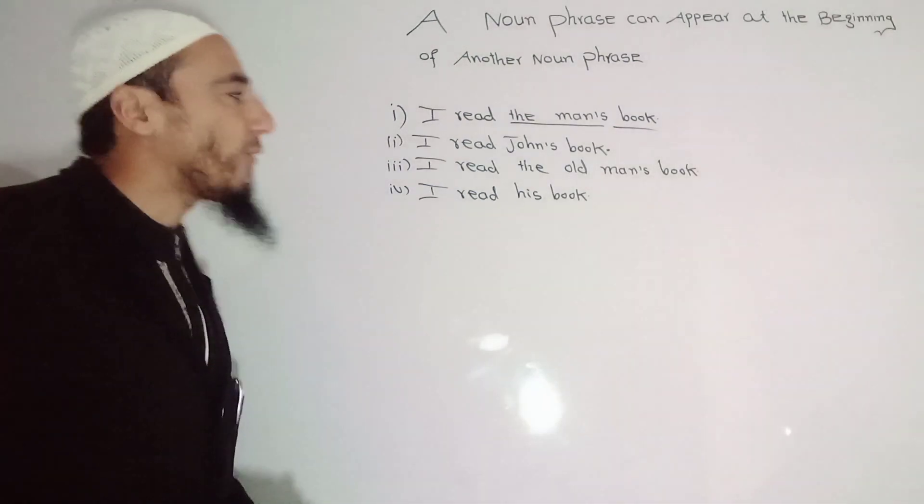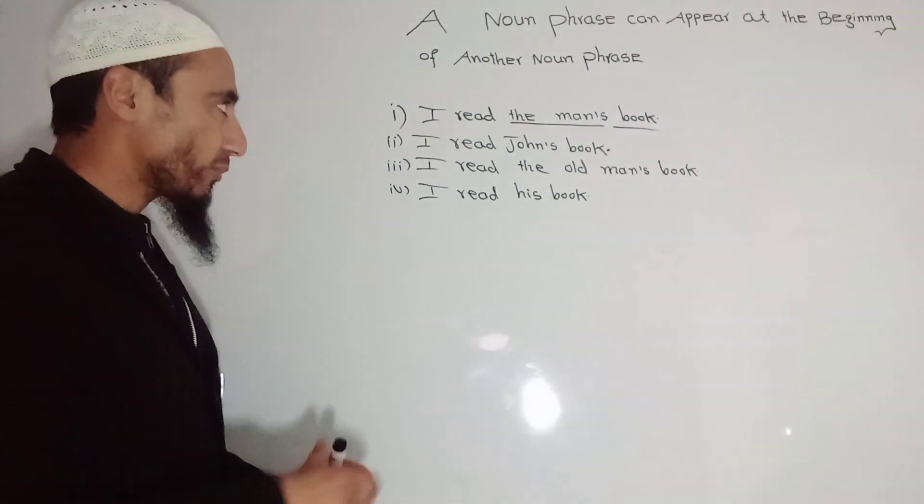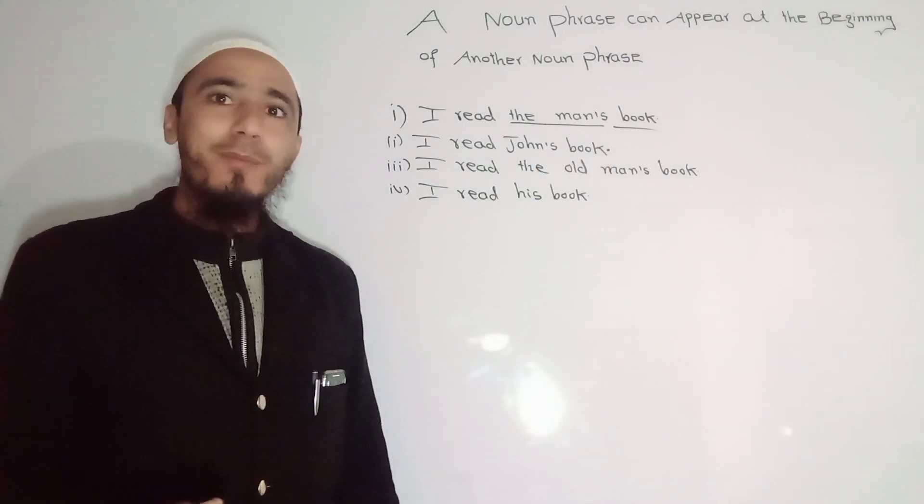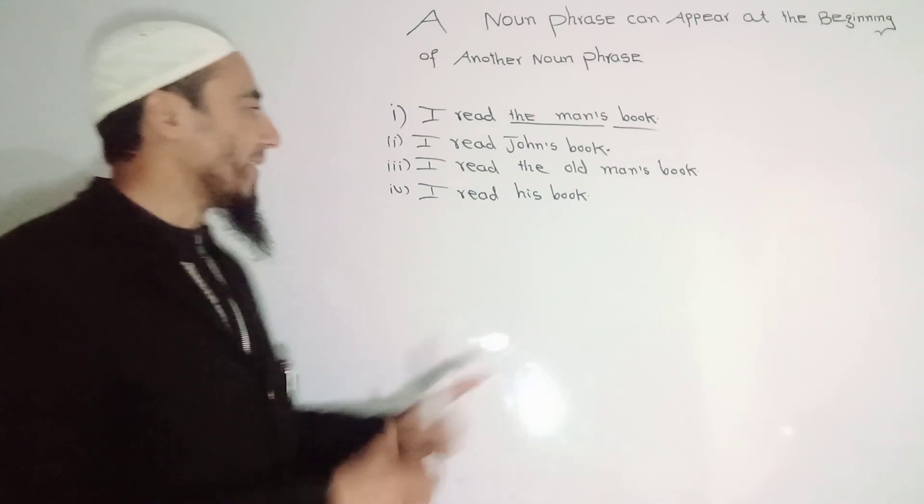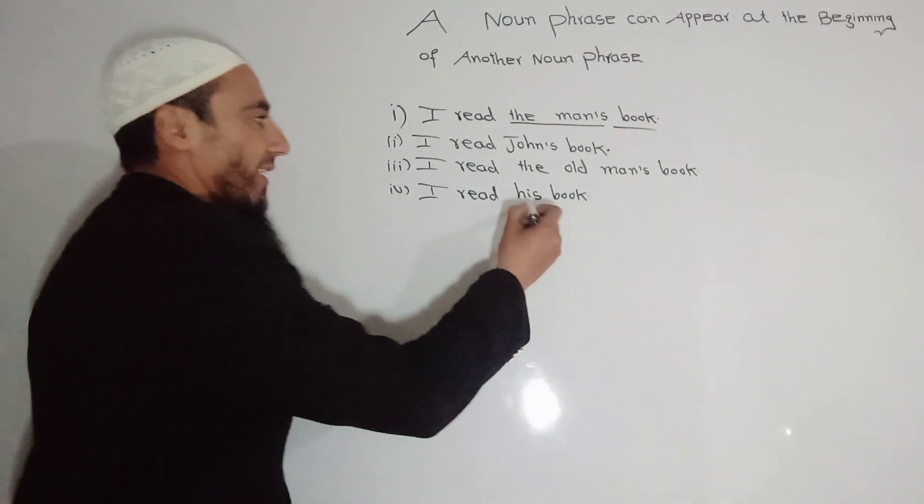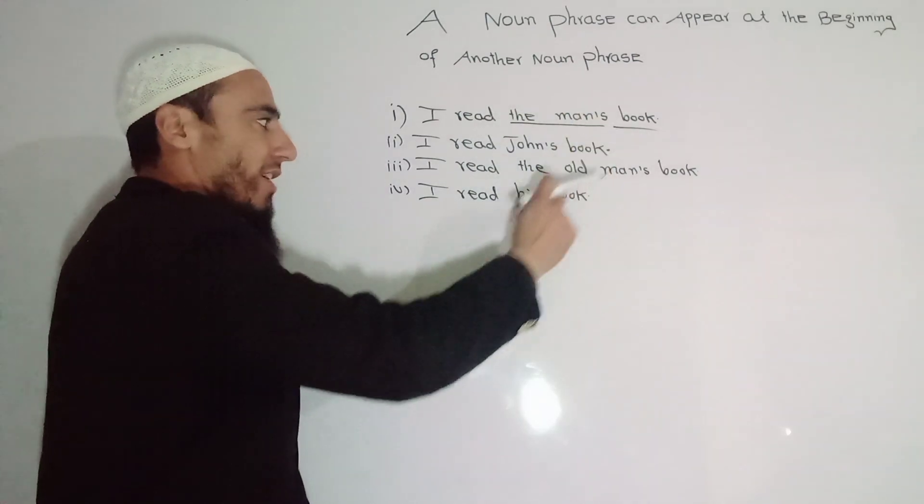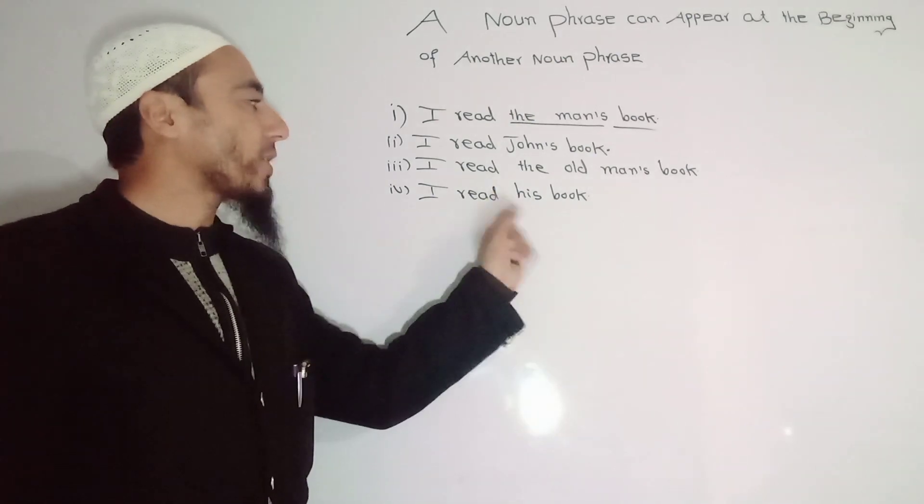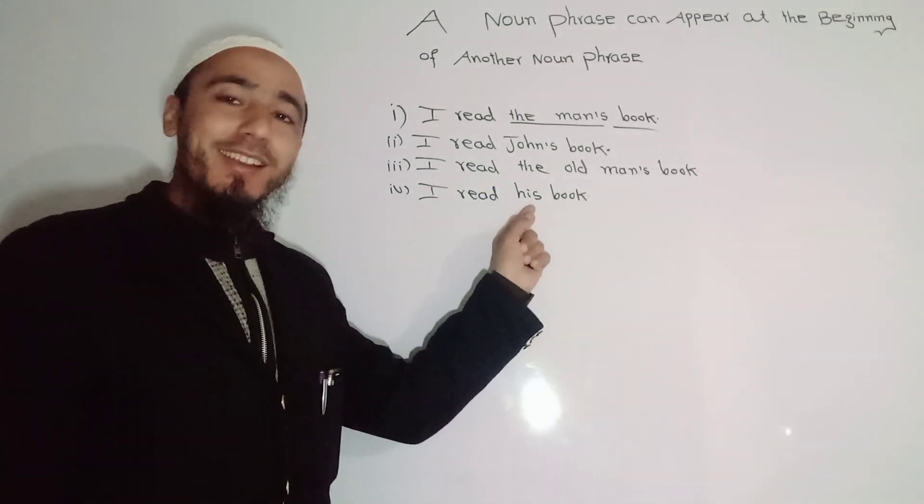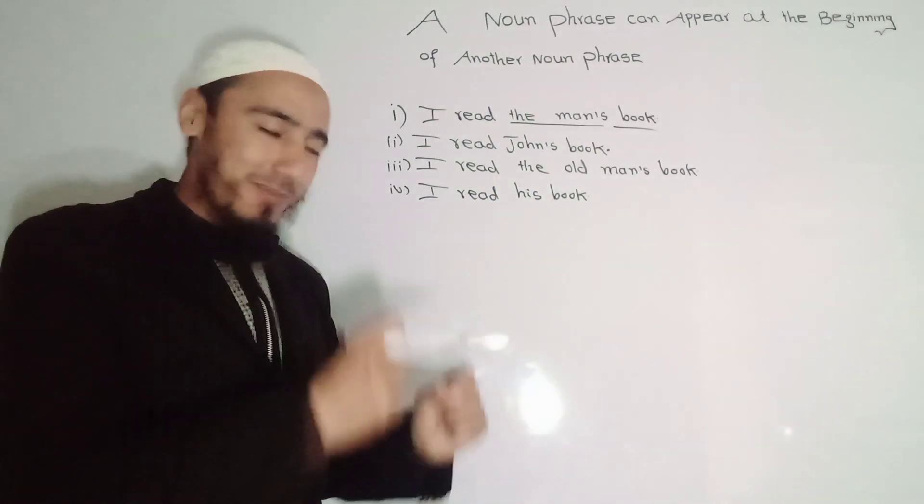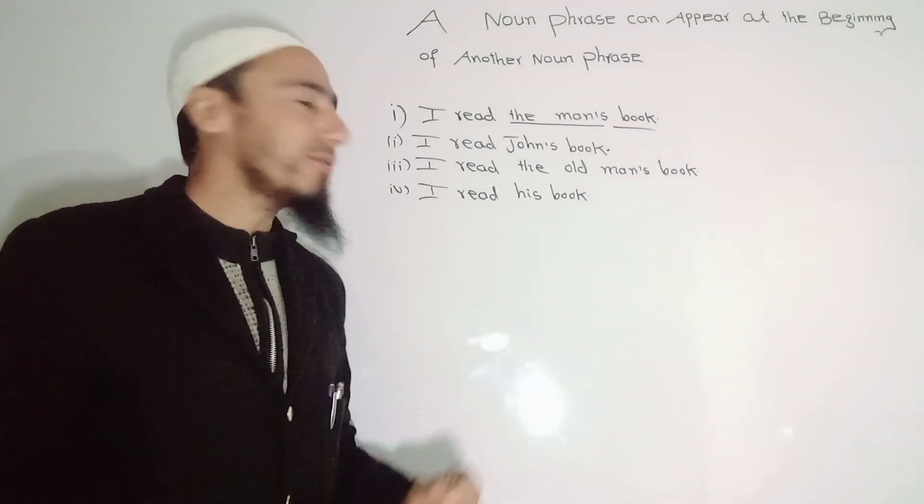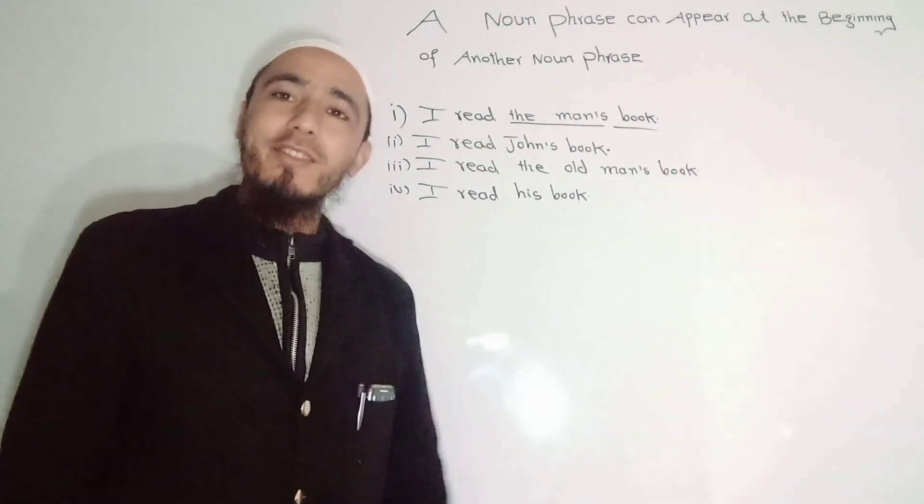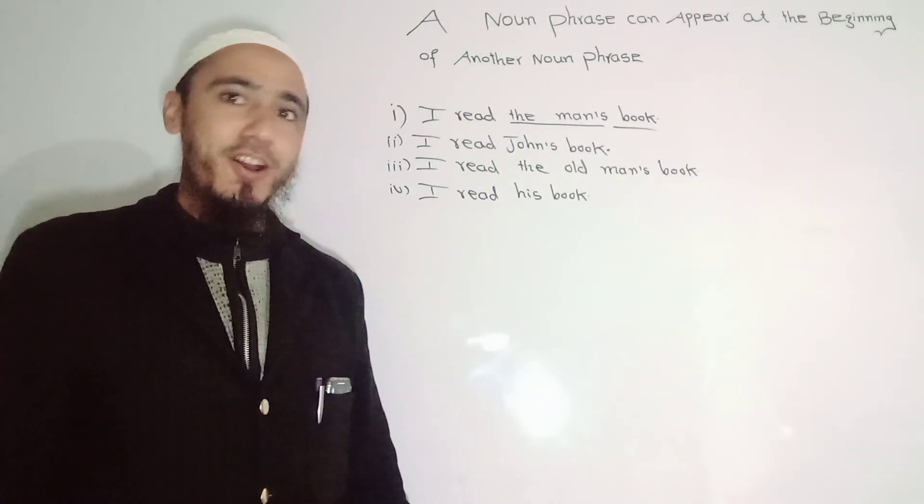Another interesting point about this is that we can replace 'the man' with just a single word, and that is 'his.' For example, I read his book. Instead of 'the man,' you can write 'his.' So you can substitute or replace this with just a single word, that is 'his.' From this we conclude that this is a noun phrase, and you know already about the book, which is a noun and noun phrase.